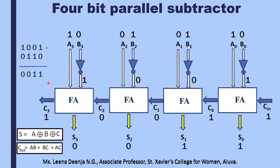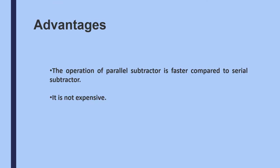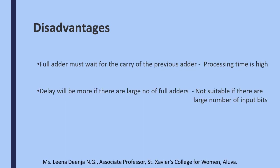It is clear that we can construct a 4-bit parallel subtractor using 4 full adders, with carry-in equal to 1. The operation of a parallel subtractor is faster compared to that of a serial subtractor and it is not expensive. However, in a chain process each full adder must wait for the carry of the previous adder, so processing time is high. Delay will be more if there are a large number of full adders, so it is not suitable if there are a large number of input bits.